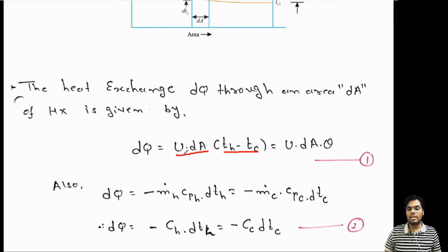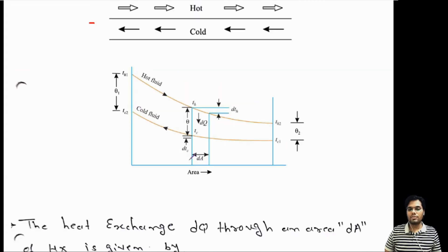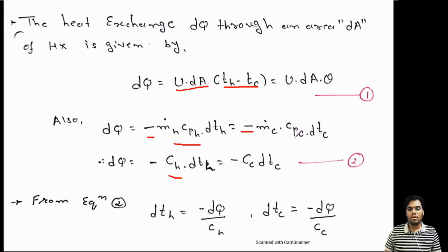We also know that the heat transfer rate DQ equals, for hot fluid: minus MH·CPH·DTH, and for cold fluid: minus MC·CPC·DTC. We put a minus sign in front of both because as we move along the exchanger, the temperature of both hot and cold fluids are decreasing. The combined product of mass flow rate and specific heat is heat capacity, so we write CH for MH·CPH and CC for MC·CPC. From these equations: DTH = -DQ/CH and DTC = -DQ/CC.